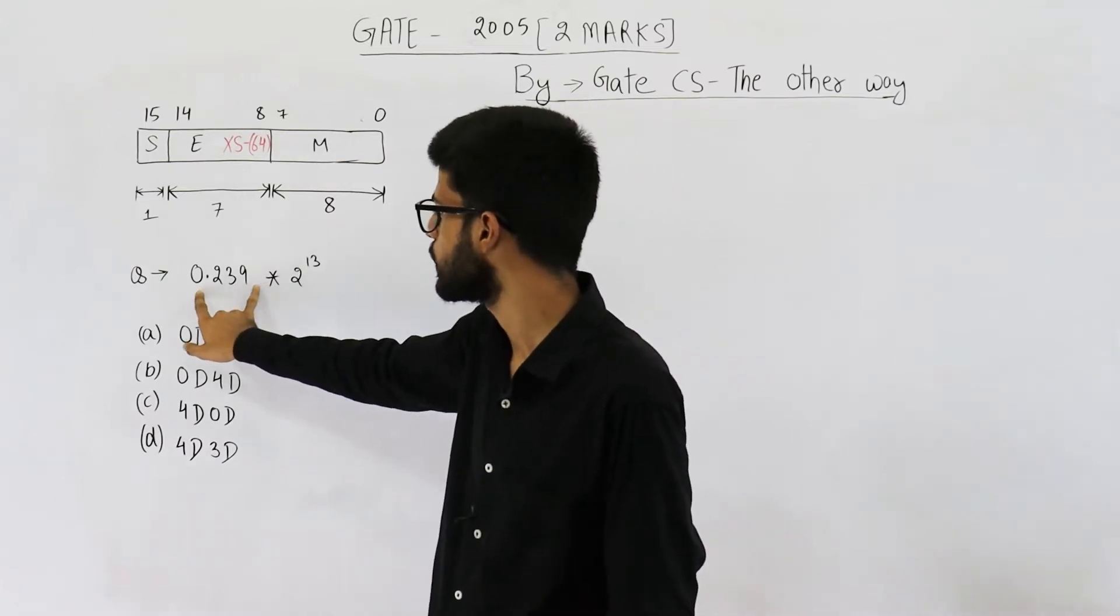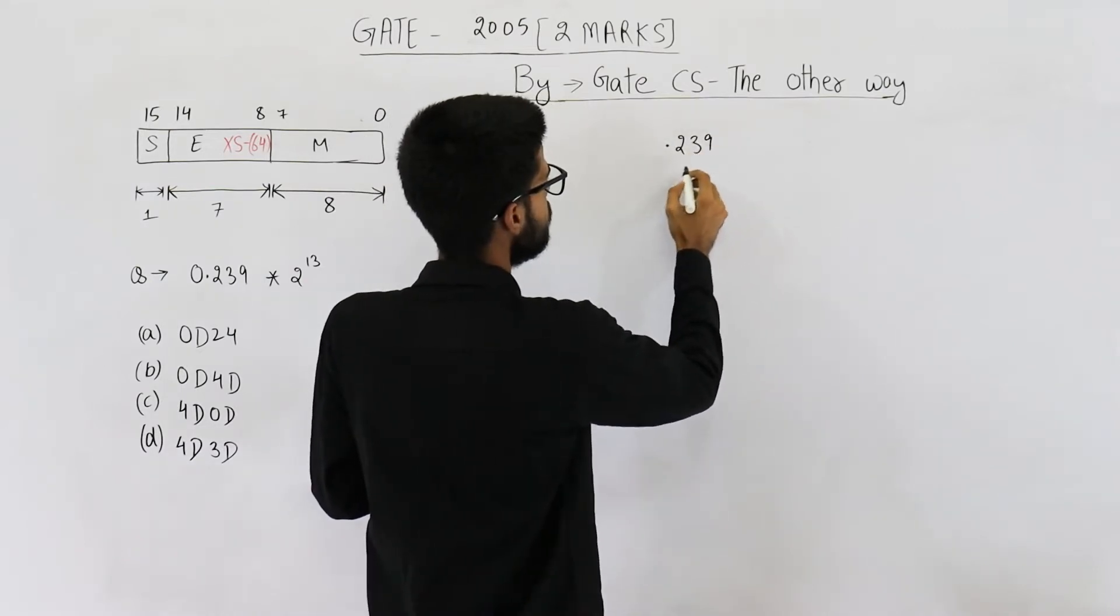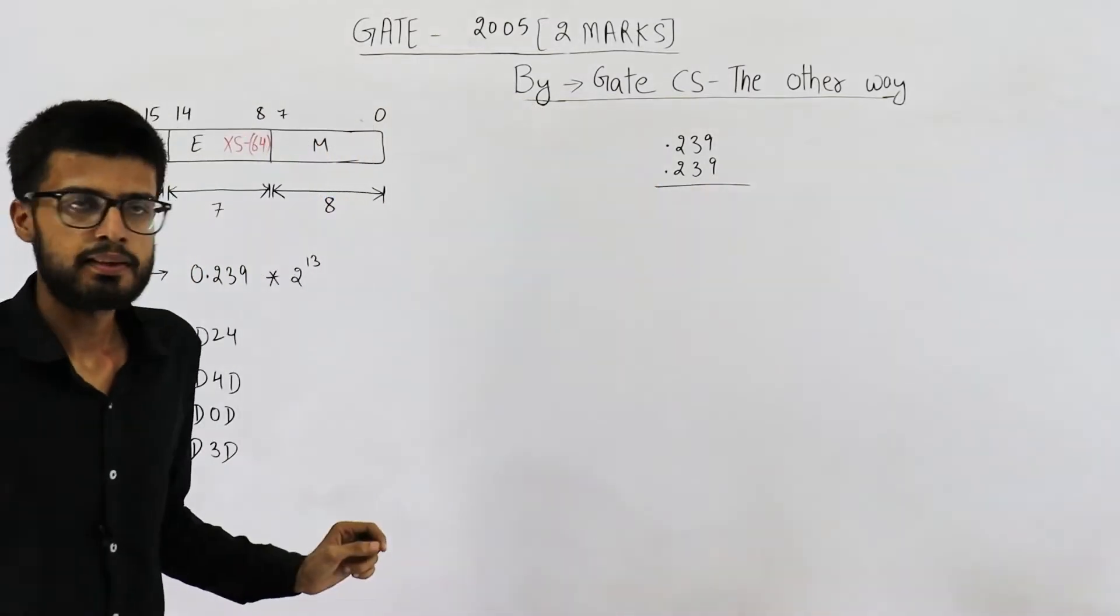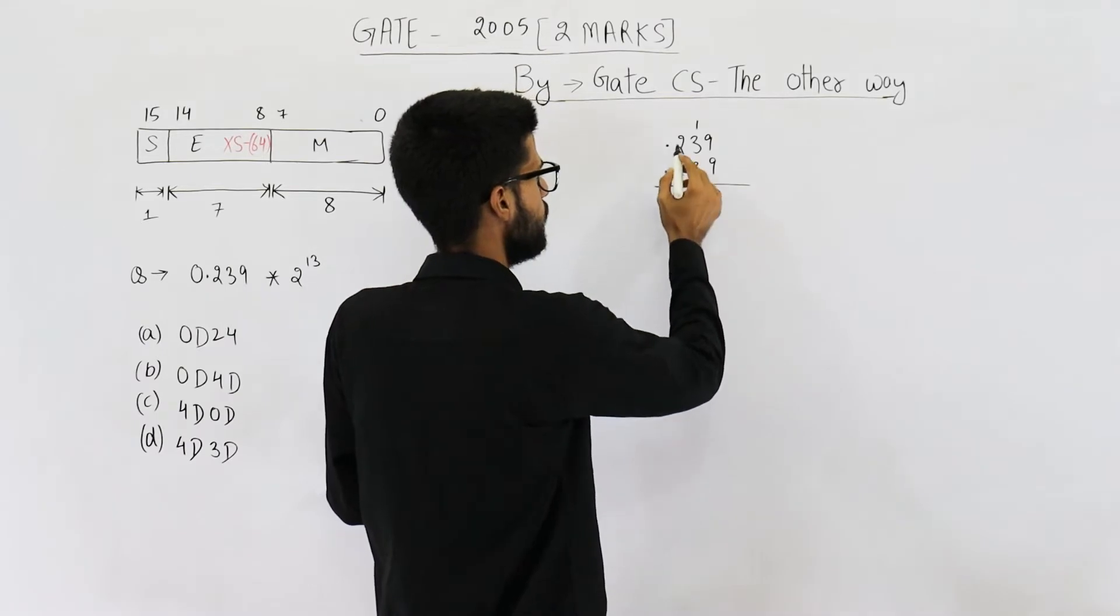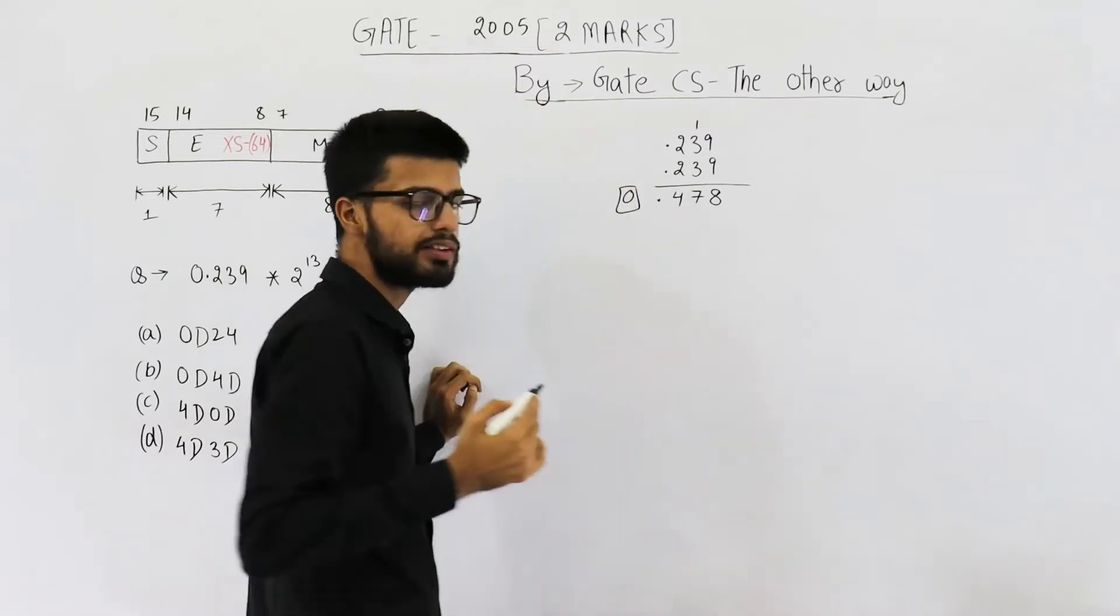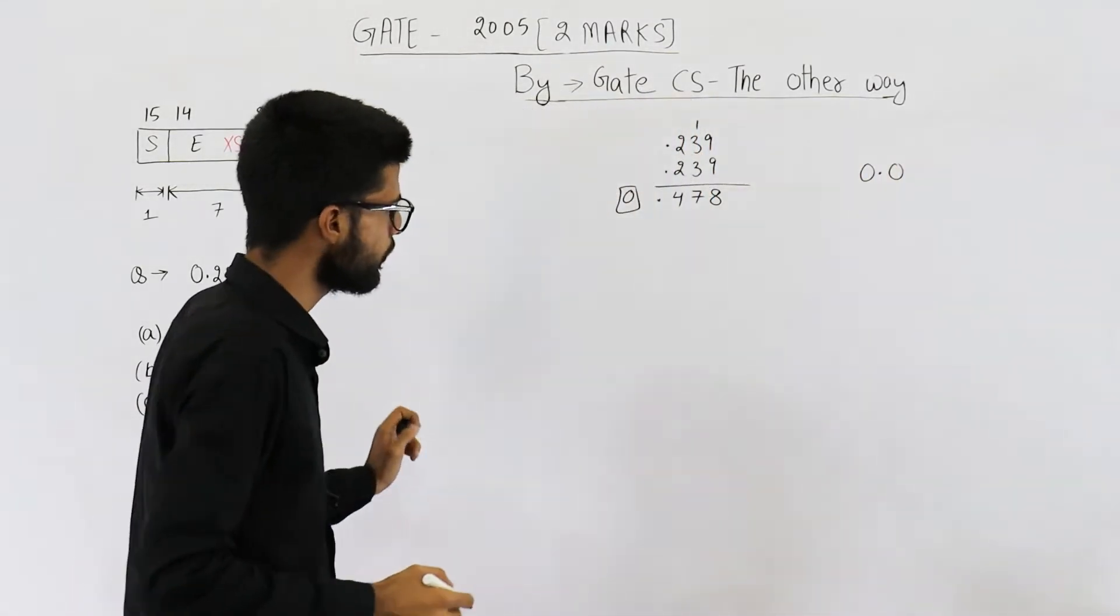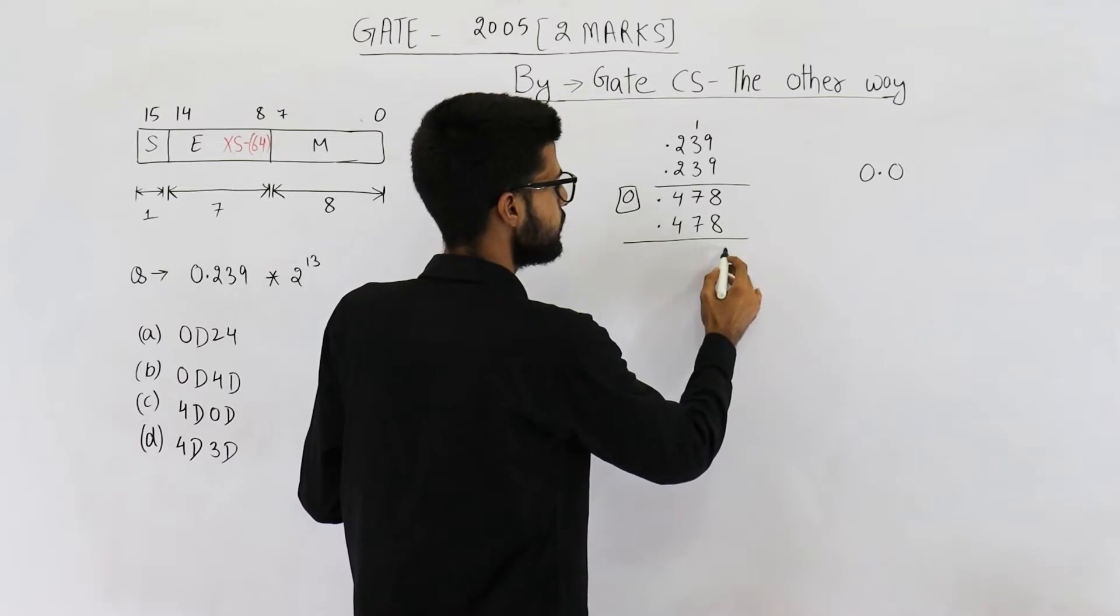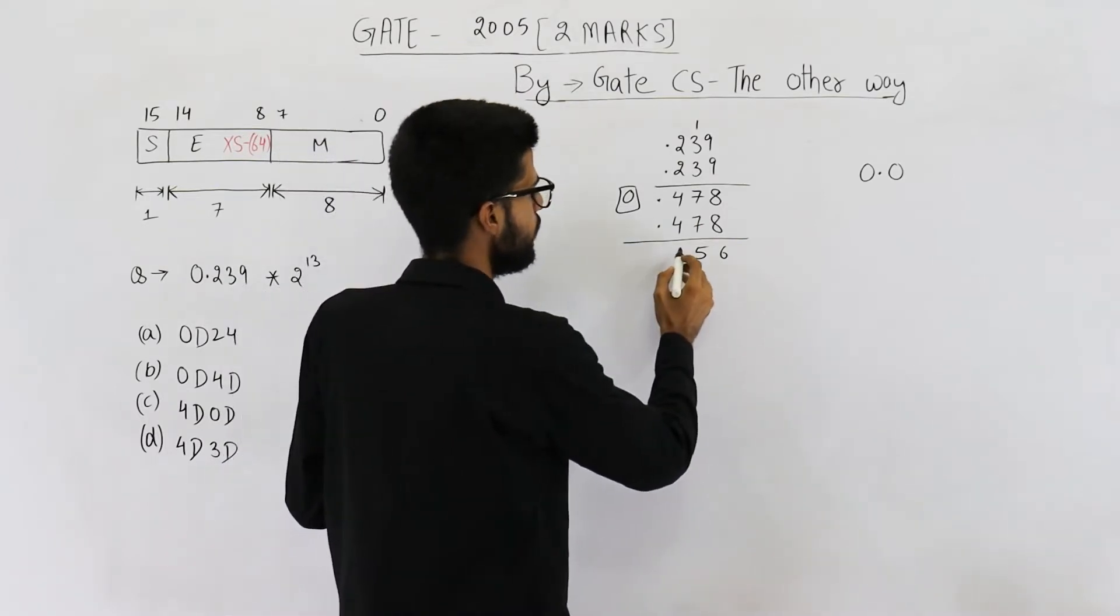So let us first convert this into binary. So 0.239. 9 plus 9 is 18. So you get a 1 here. 3 plus 3 is 6 and 1 is 7. 2 plus 2 is 4. So this is 0.0 something. So the first bit is 0.0. This is the first bit.